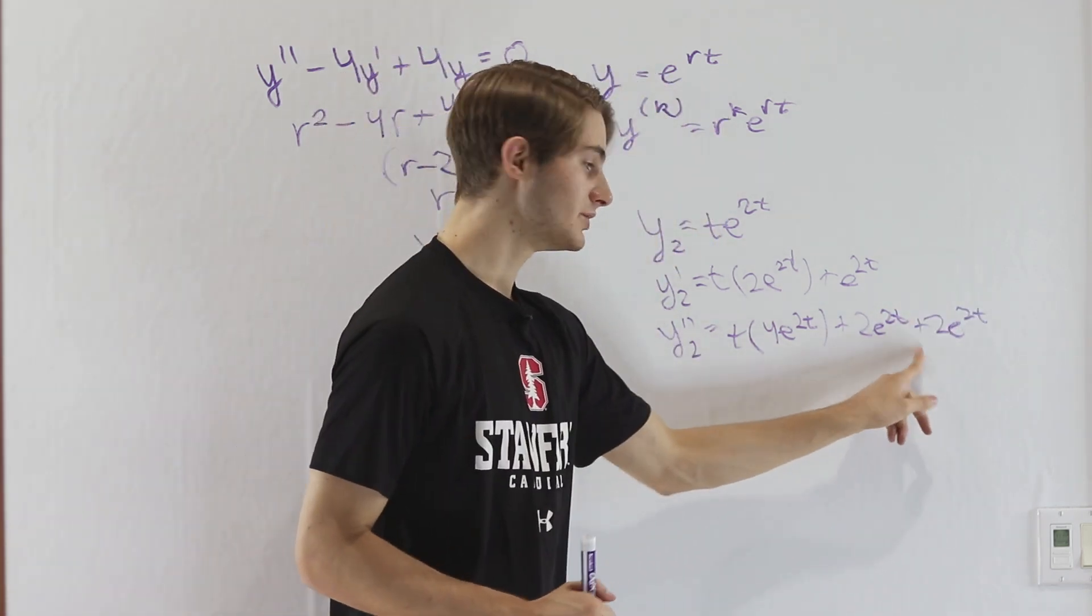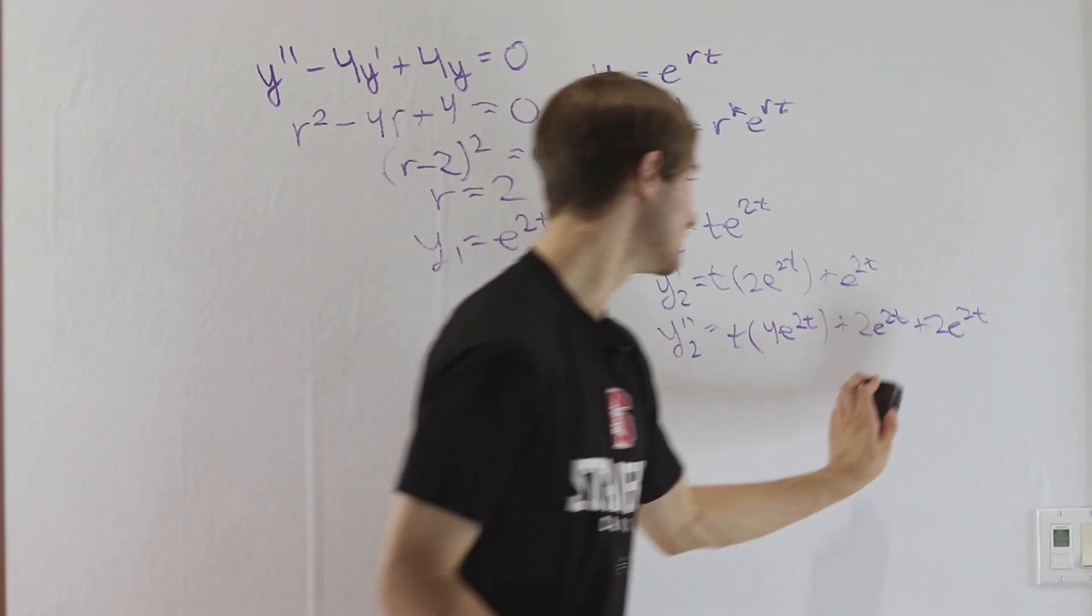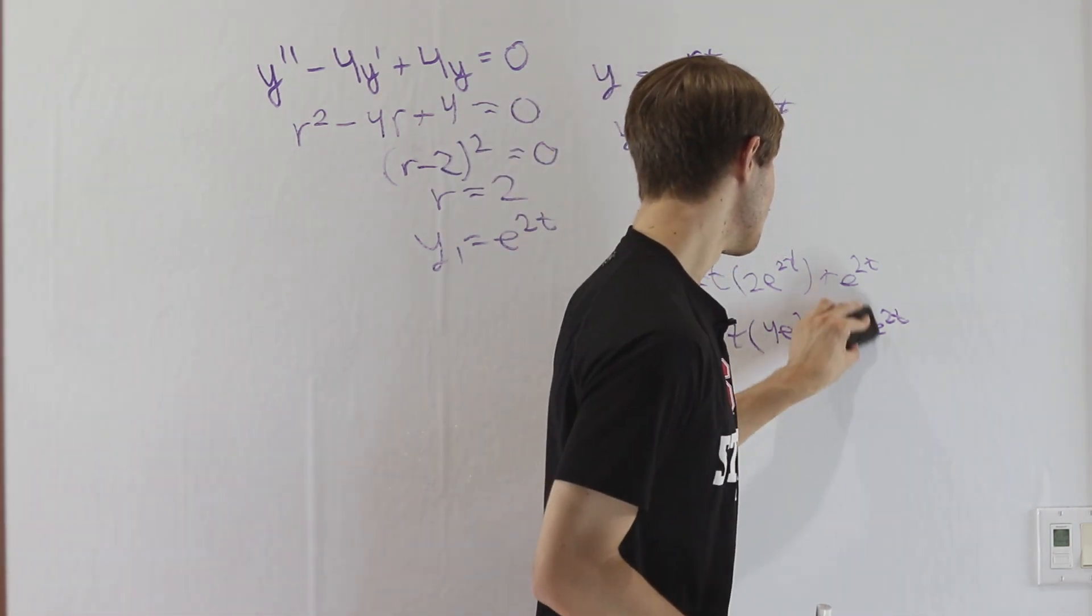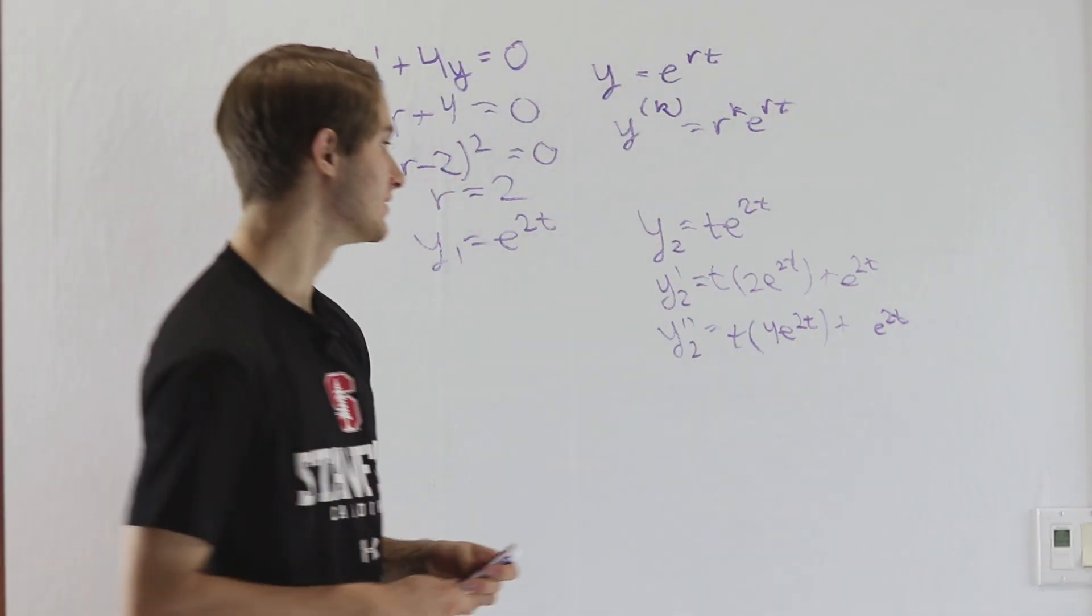So over here, we have 2 e to the 2t and then another 2 e to the 2t. If we add those together, this is going to become a 4 e to the 2t.